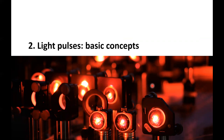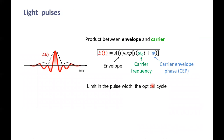I will now review a basic concept related to light pulses that will allow us to follow the rest of the winter school. The first thing is: what is a light pulse? Basically, a light pulse can be described as an envelope and a carrier. In the simple case where I can separate the spatial and temporal dependence of the electric field, I can write the electric field as an envelope times a phase. This phase contains the carrier frequency and the carrier envelope phase — I will come back to this concept later.